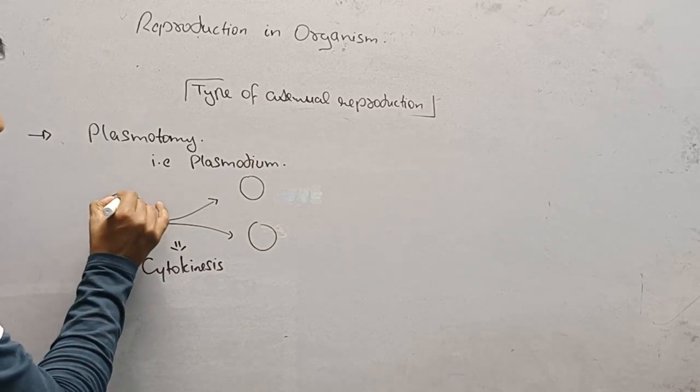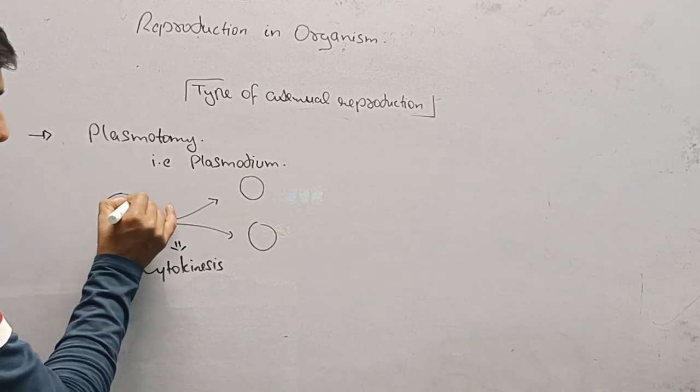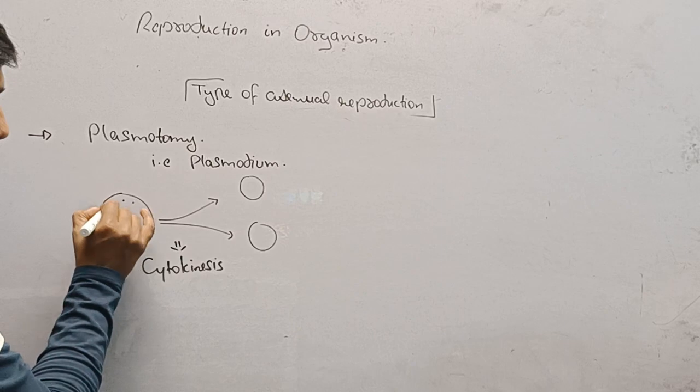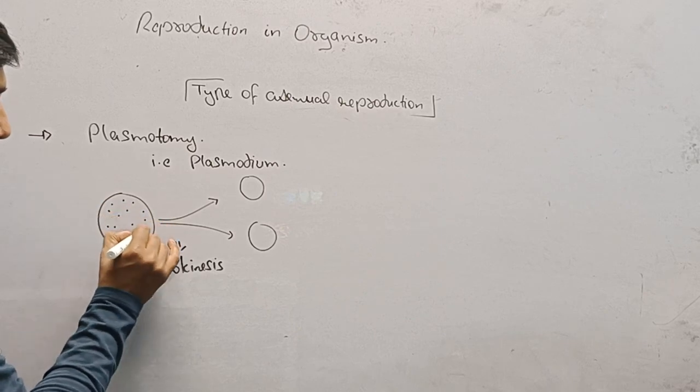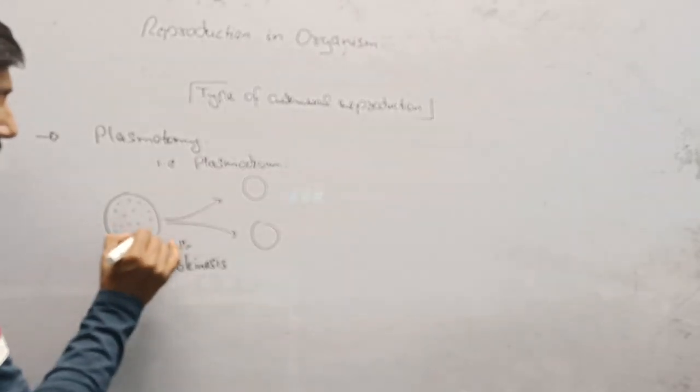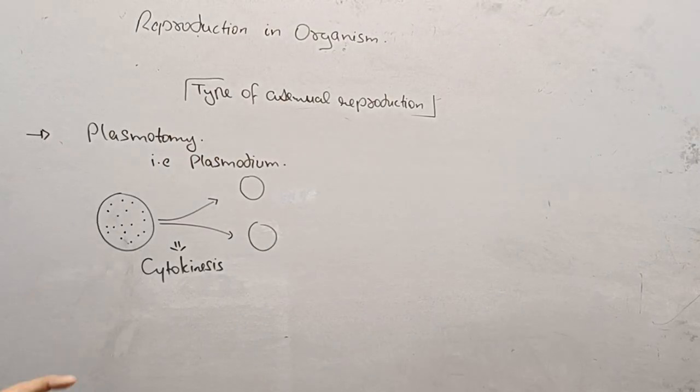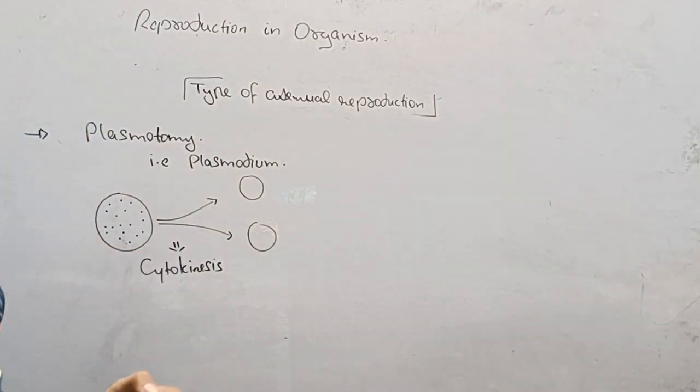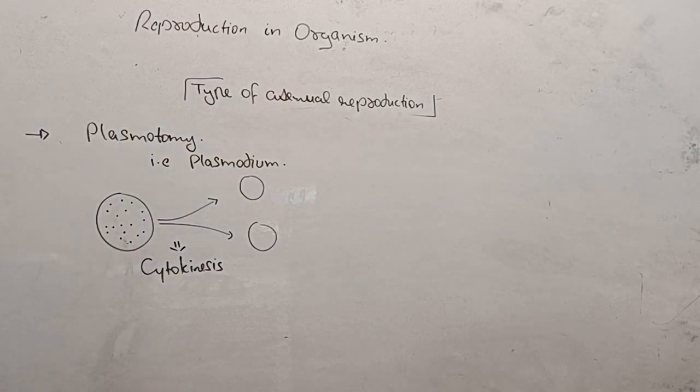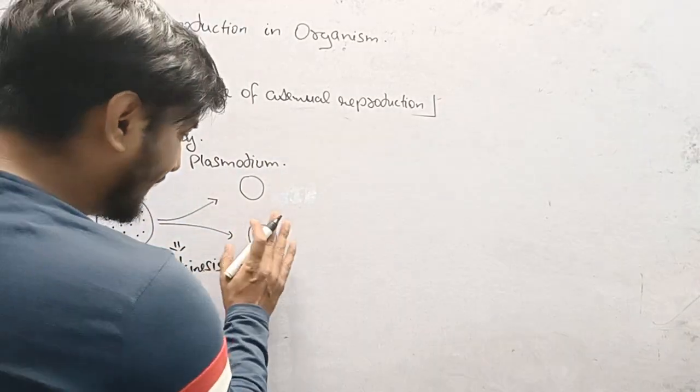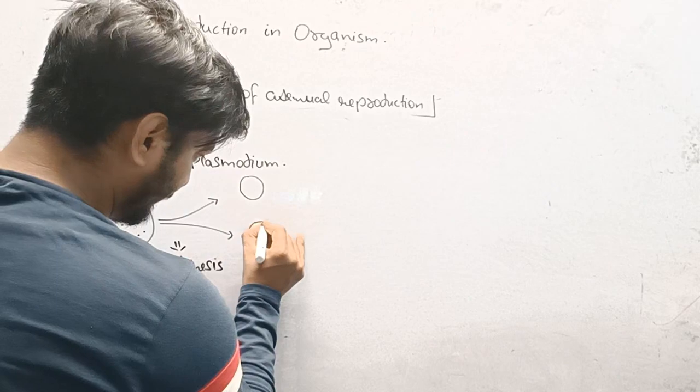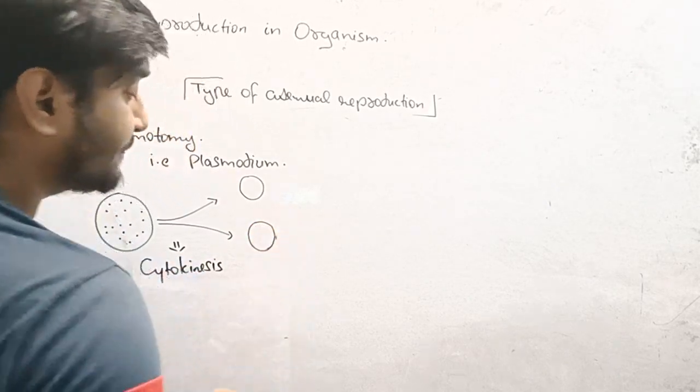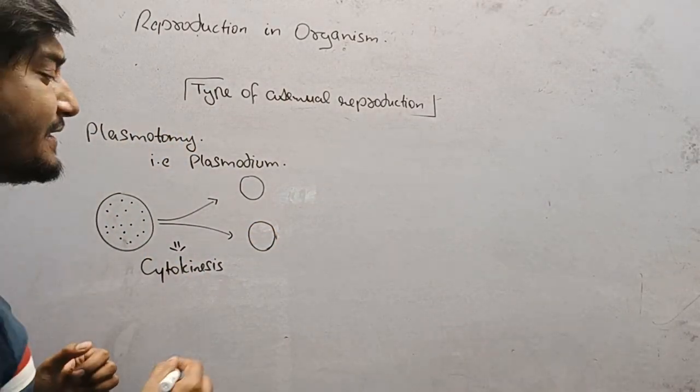We can see inside the body there are 18 nuclei: 1, 2, 3, 4, 5, 6, 7, 8, 9, 10, 11, 12, 13, 14, 15, 16, 17, 18. But when it undergoes the process of cytokinesis, the body does not get equal amounts of nuclei.